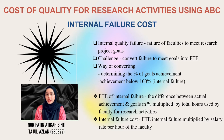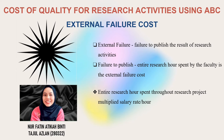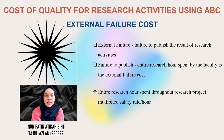The challenge is to convert failure to meet goals into FTE. One way of converting internal failure is by determining the percentage of goal achievement — achievement below 100% represents internal failure. FTE of internal failure is calculated by the difference between actual achievement and goals in percentage, multiplied by the total hours used by the faculty for research activities. Internal failure cost is calculated by taking FTE of internal failure multiplied by salary rate per hour. External failure cost is defined as failure to publish results of research activities. A research project may take multiple years to accomplish and get published, so only in the year of publication will there be a measurement for external failure. Failure to publish is defined as the failure of the entire research work, calculated as total research hours spent throughout the project multiplied by salary rate per hour.